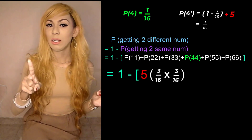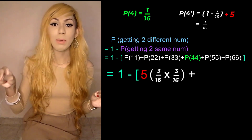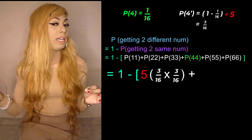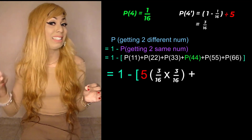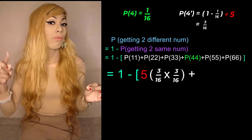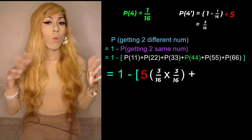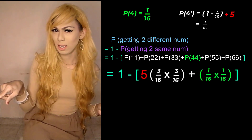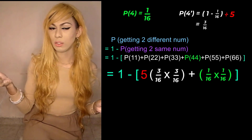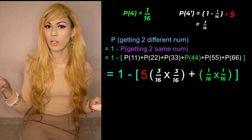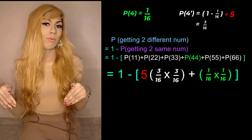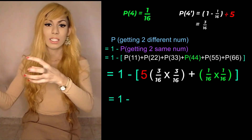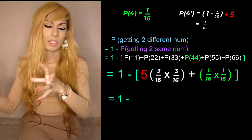We then add the probability of getting four-four. Since the probability of getting four is one over sixteen, getting four-four would be one over sixteen times one over sixteen. So the full expression inside the bracket is five times (three over sixteen squared) plus (one over sixteen squared).